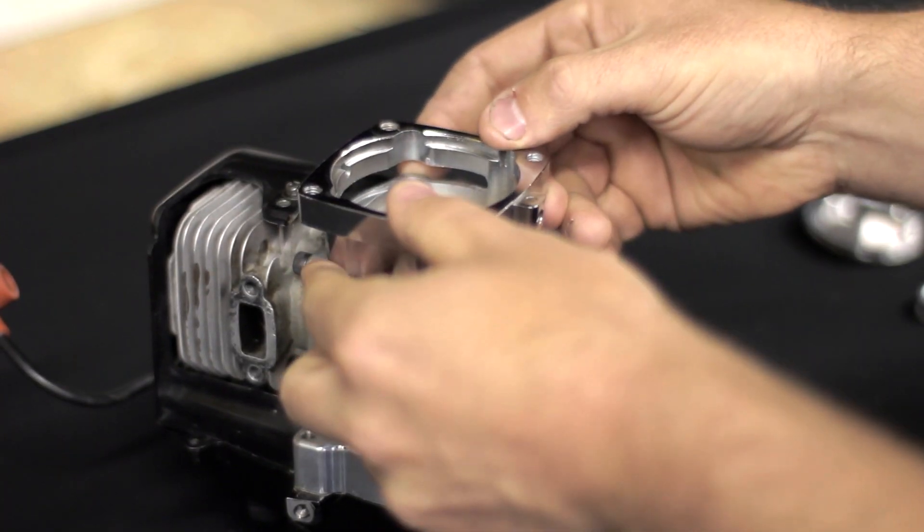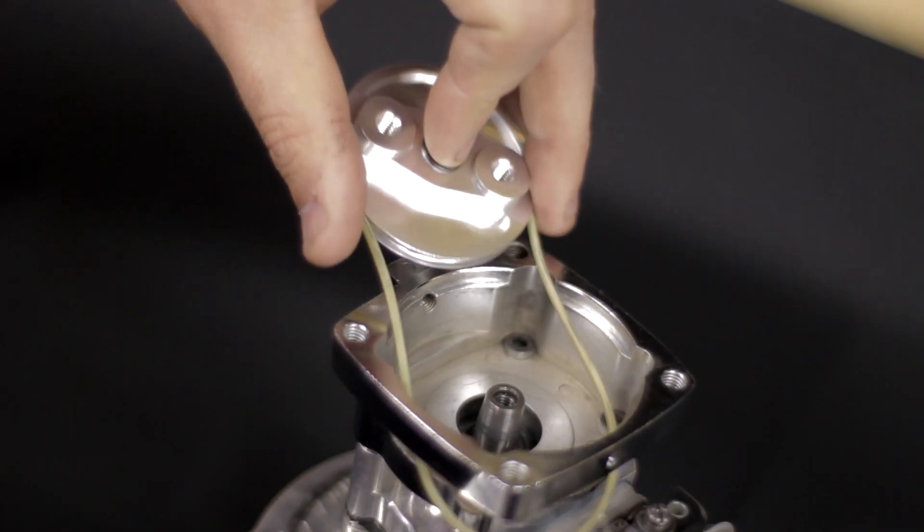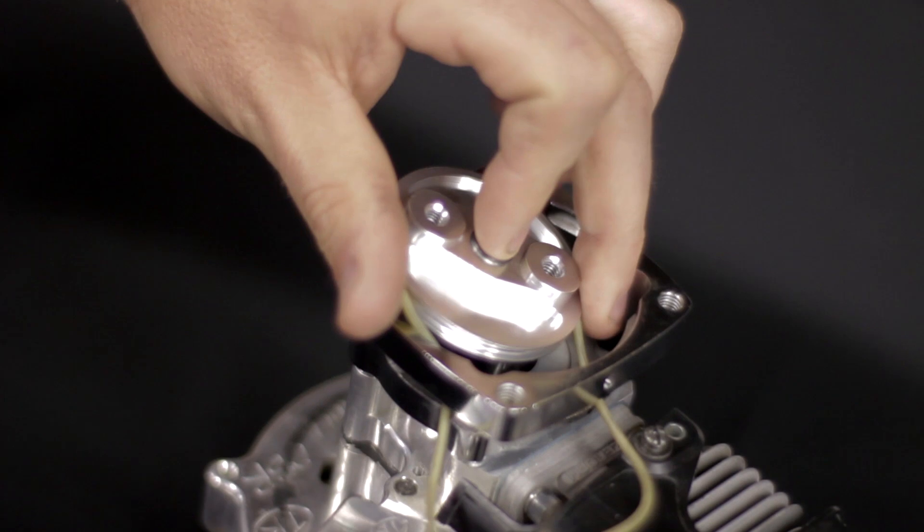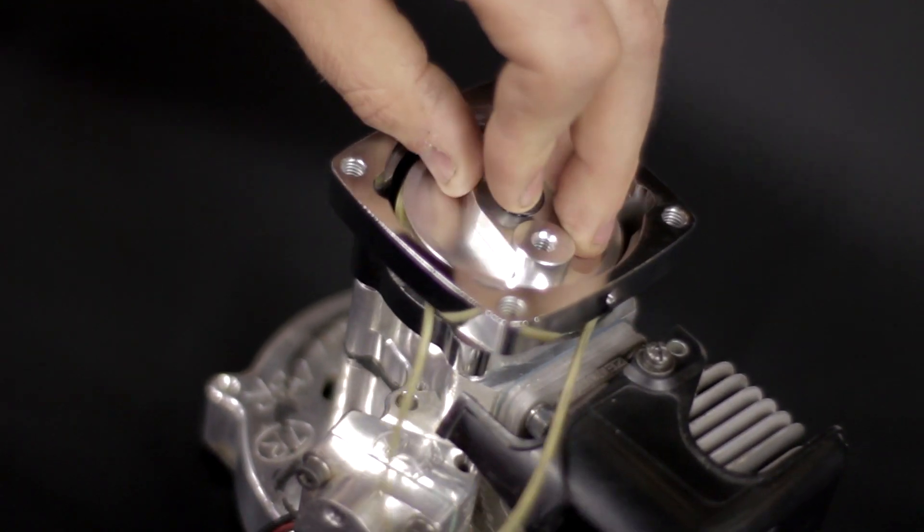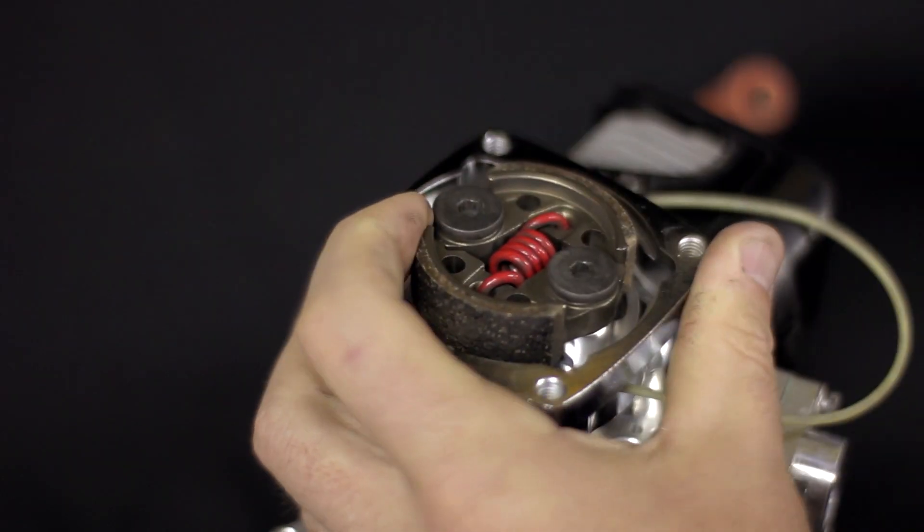The first thing you want to do is install the clutch housing using the four bolts and Loctite. Next, we're going to install the belt and drop the clutch plate down onto the engine crankshaft. Next, you'll want to reinstall the clutch.